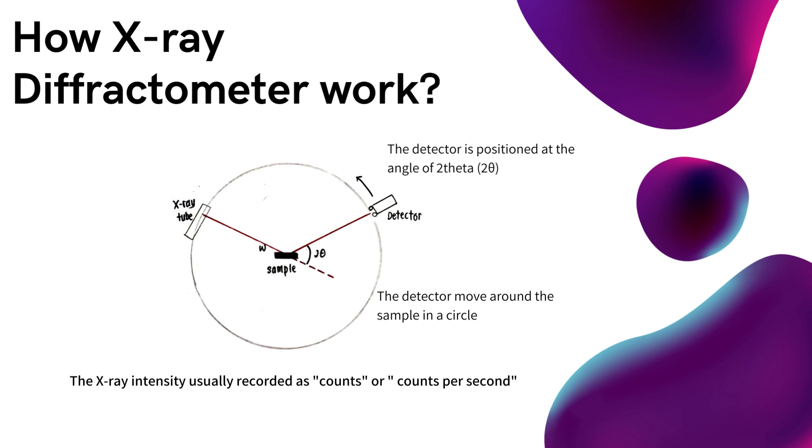The detector moves around the sample in a circle and is positioned at the angle of 2 theta, thus it will record the number of X-rays observed at angle of 2 theta. The X-ray intensity is usually recorded as counts or counts per second.